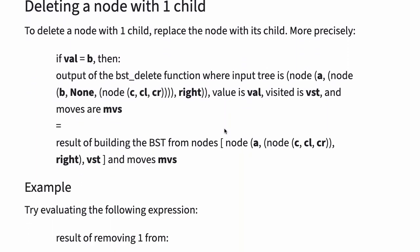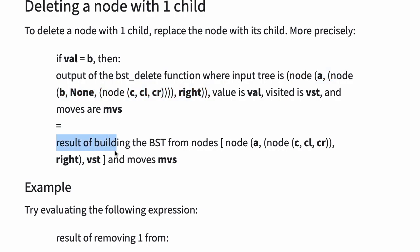To delete a node with one child, replace the node with its child. More precisely, if val is equal to B, then the output of the BST delete function where the input tree is node A, node B, and node C with CL and CR, and right, value is val, visited is VST, and moves are MVs, is equal to the result of building the BST from nodes A with left child C, CL, CR, and right, VST, and moves MVs.